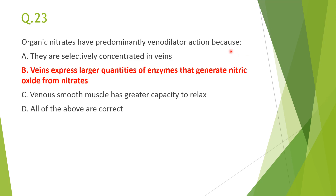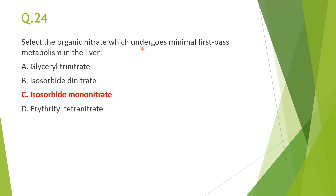Question 23: organic nitrates have predominantly venodilator action because — answer B: veins express larger quantities of the enzyme that generates nitric oxide from nitrates. Nitrates reduce preload by venodilatation, achieved through conversion of nitrate into nitric oxide via the enzyme mitochondrial aldehyde dehydrogenase, which is selectively expressed in veins. The other options — selective concentration in veins or greater capacity to relax — are not correct.